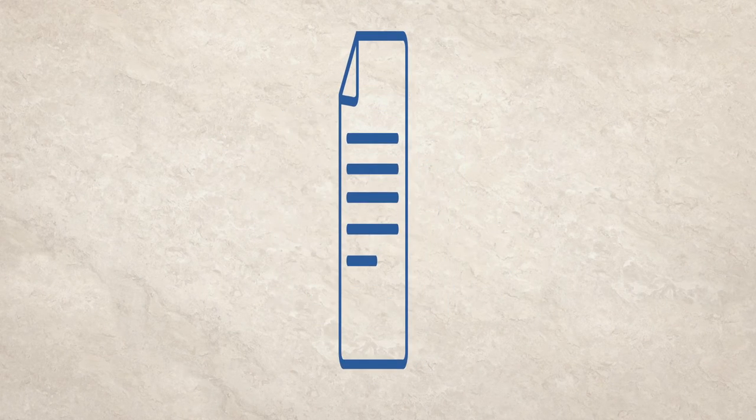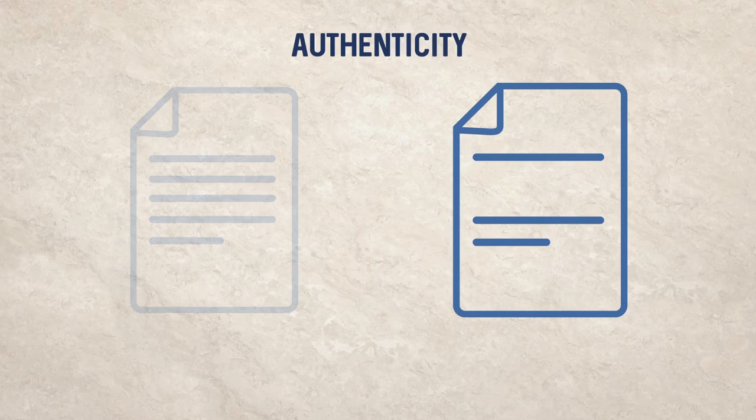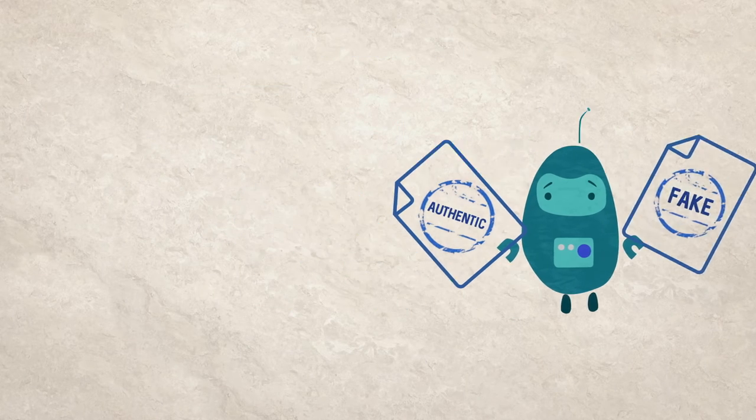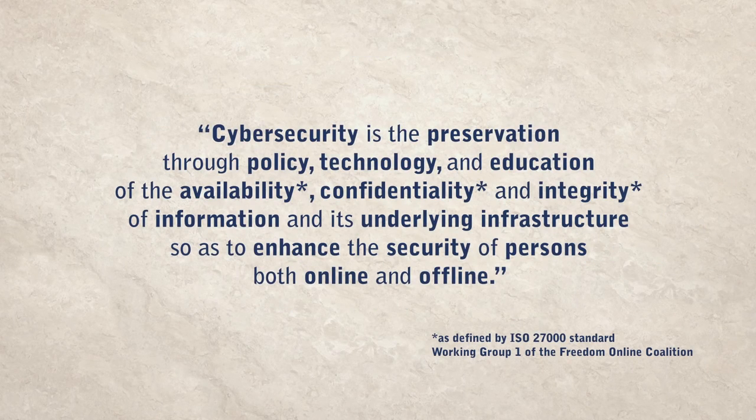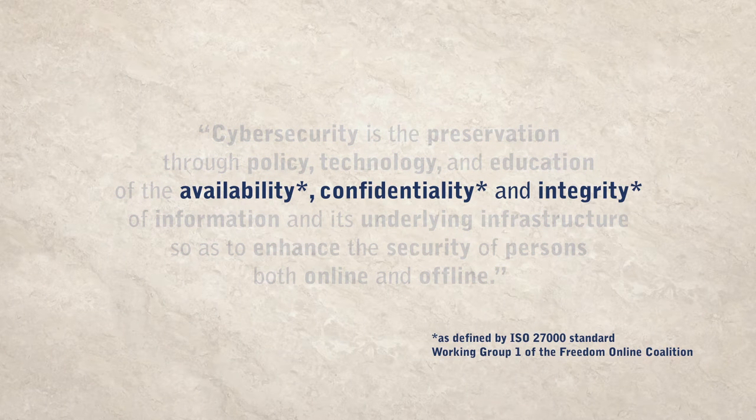Data and metadata in cyberspace can be vulnerable at different points and be undermined in different ways. It can be copied, modified or made inaccessible. Or its origin could be faked, a violation of authenticity. Violations of confidentiality, integrity, availability and authenticity can have different culprits.